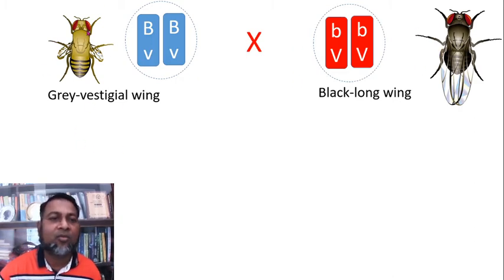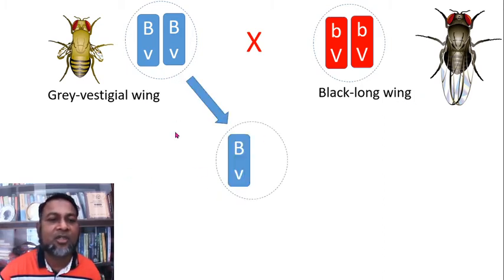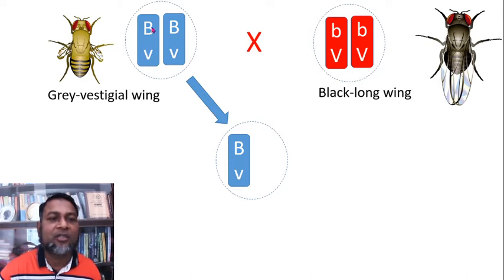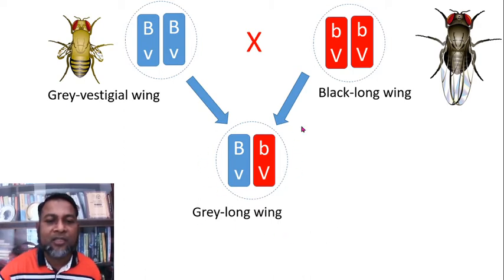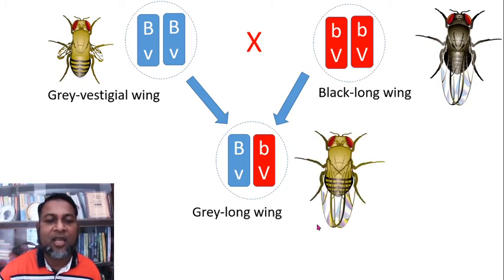These are the parents. When gray vestigial wing Drosophila is crossed with black long wing Drosophila, they create F1. Capital V and small V come from gray vestigial wing, and small V and capital V come from the black long wing to the zygote. In this zygote, capital V creates gray color and capital V creates long wing. As a result, F1 is gray-colored long-wing Drosophila.